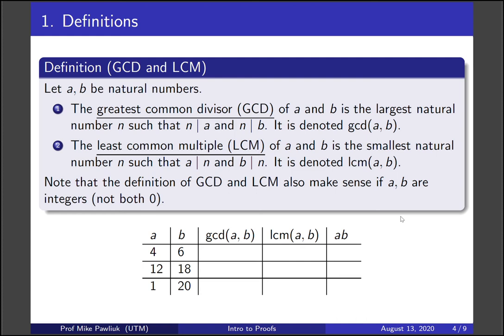The least common multiple or LCM of A and B is the smallest natural number where A divides N and B divides N, and it's denoted LCM(A,B).